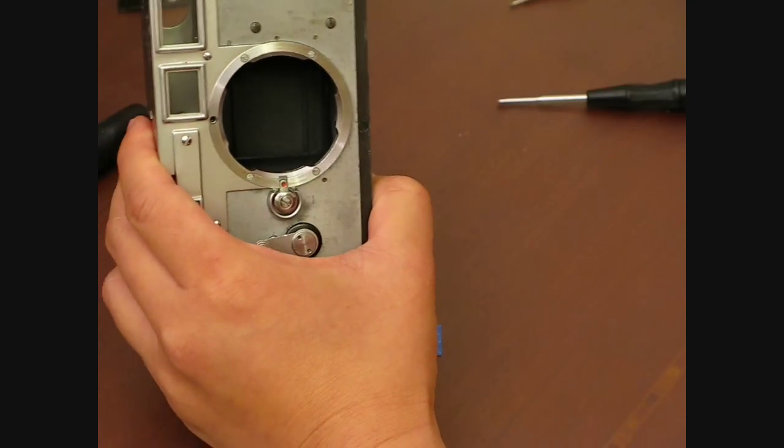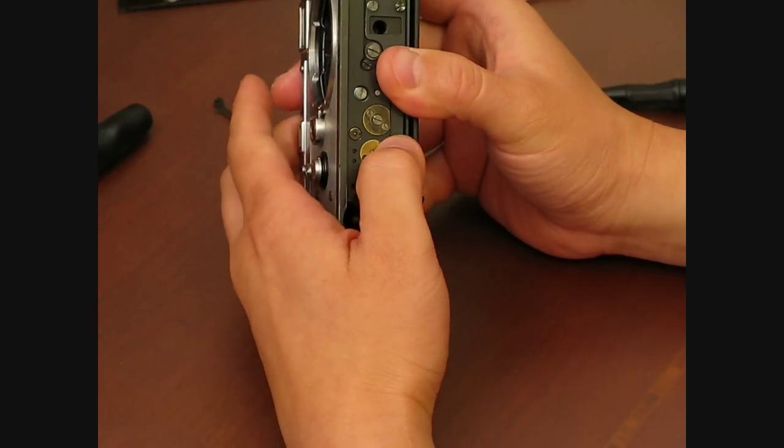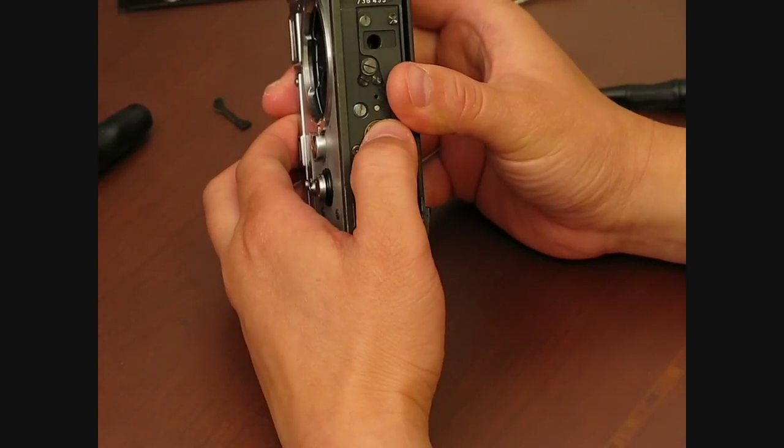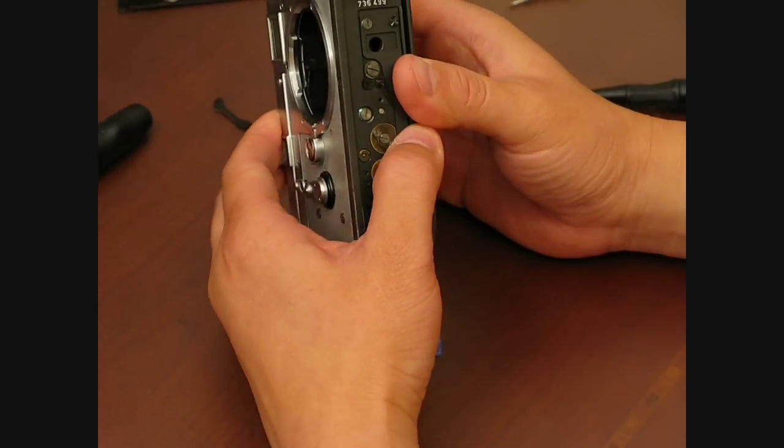So that is basically it in terms of the shutter adjustment. You can do this on M's up to the M4s. The M6 looks a little bit different, but the basic principle is the same.